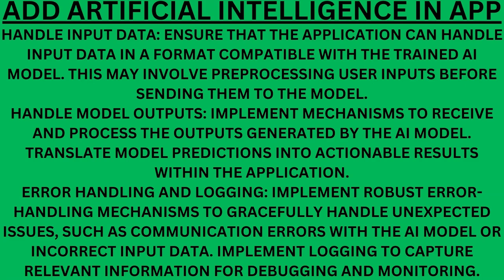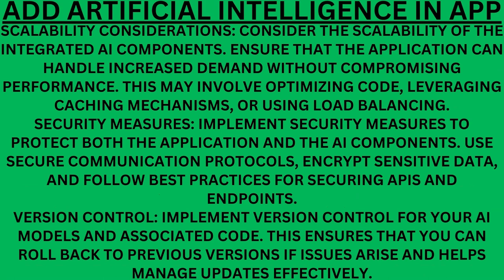Implement logging to capture relevant information for debugging and monitoring. Scalability considerations. Consider the scalability of the integrated AI components — ensure the application can handle increased demand without compromising performance. This may involve optimizing code, leveraging caching mechanisms, or using load balancing. Security measures. Implement security measures to protect both the application and the AI components. Use secure communication protocols, encrypt sensitive data, and follow best practices for securing APIs and endpoints. Version control. Implement version control for your AI models and associated code so you can roll back to previous versions if issues arise and manage updates effectively.